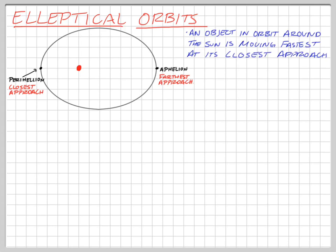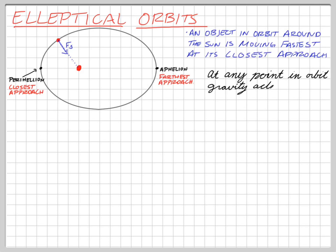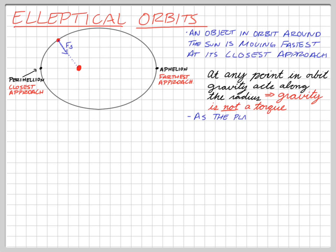Looking at the force on a planet traveling around this orbit, the radius points from the planet to the Sun, and that force points along that radius at any point in the orbit. Since gravity always points toward our gravitational center, gravity acts along the radius, which means gravity is not a torque. Therefore, angular momentum is conserved.